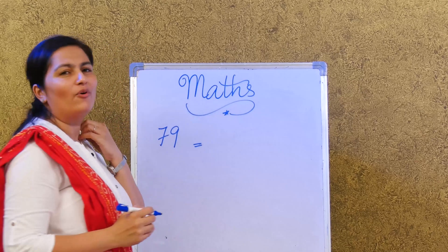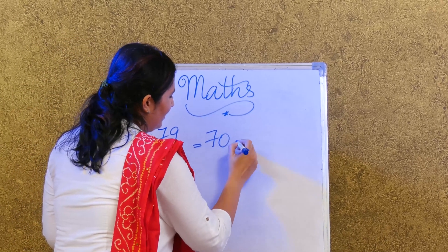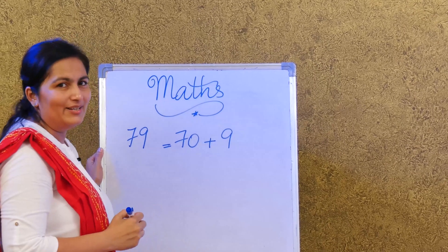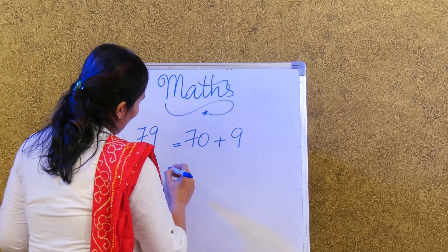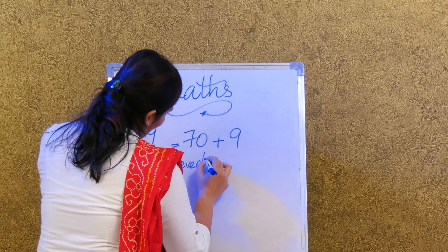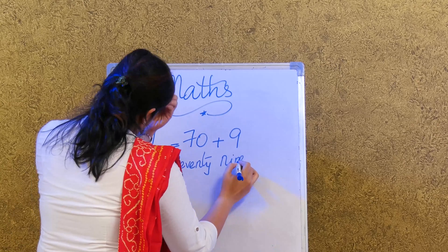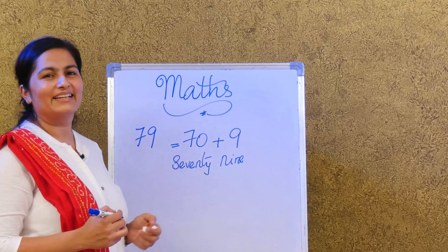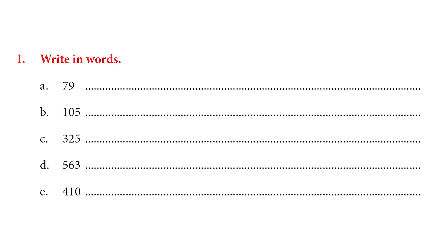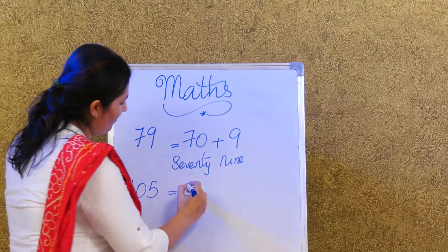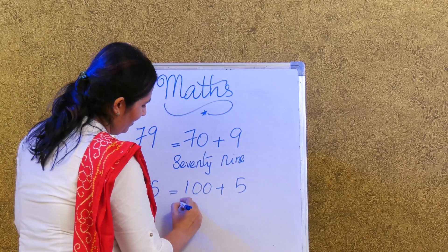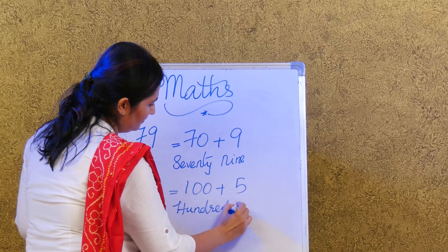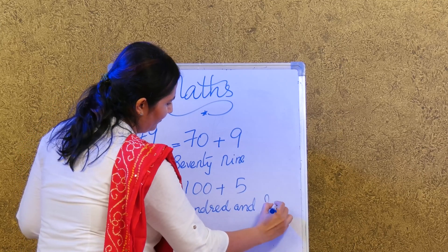The expanded form for 79 is 70 plus 9. Once we have the expanded form, it makes it easier for us to write 79. The next example is 105 — what's the expanded form? 100 plus 5. Now it's easy for us to write the number name for 105.